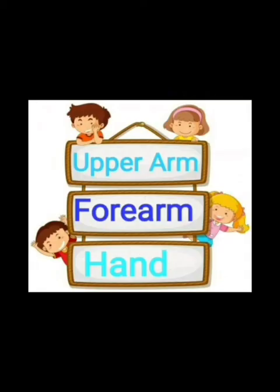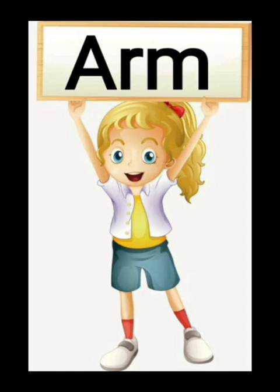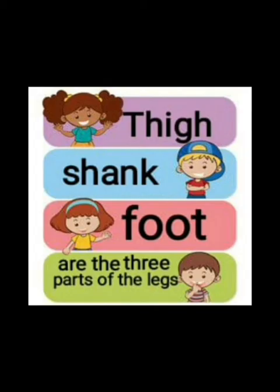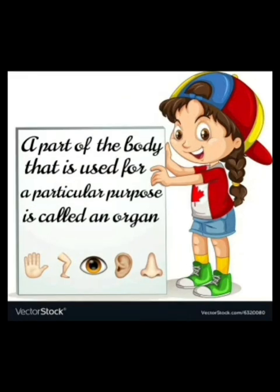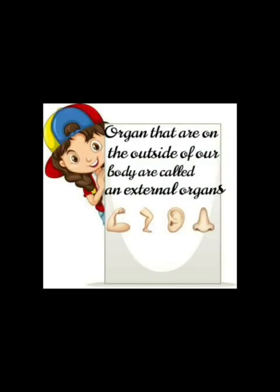Very good. Upper arm, forearm and hand are the three parts of the arm. Thigh, shank, foot are the three parts of the legs. A part of the body that is used for a particular purpose is called an organ. Organs that are on the outside of our body are called external organs. Children, I hope you have understood till here. We shall continue with our next topic in the next period. Till then, take care. Bye.